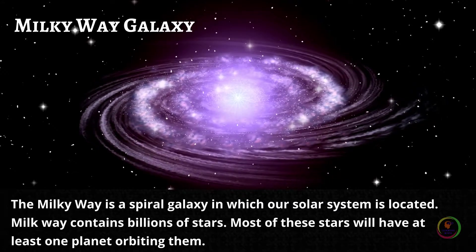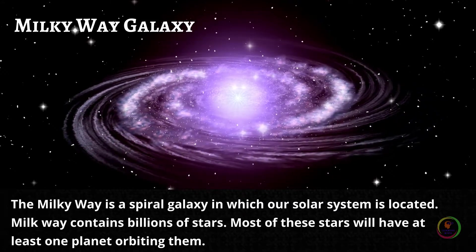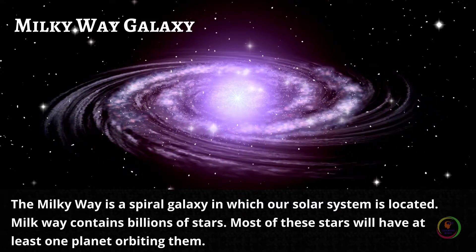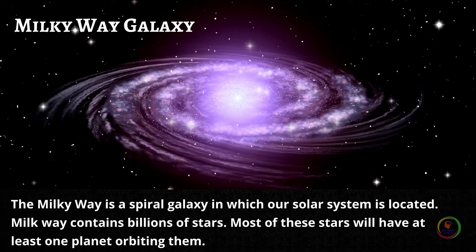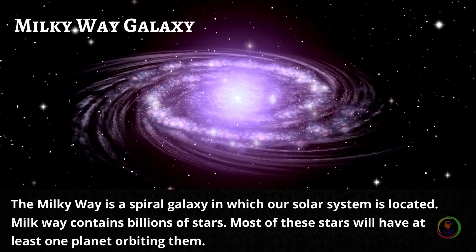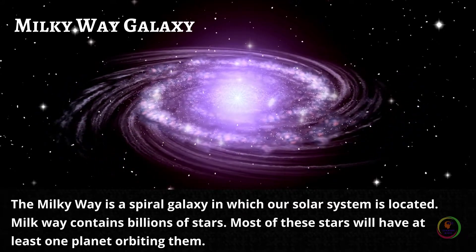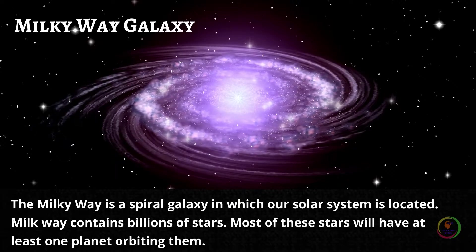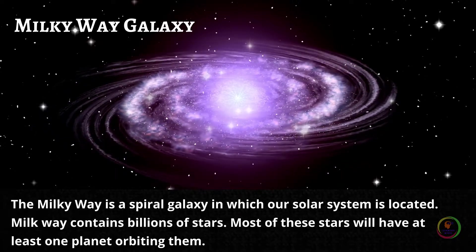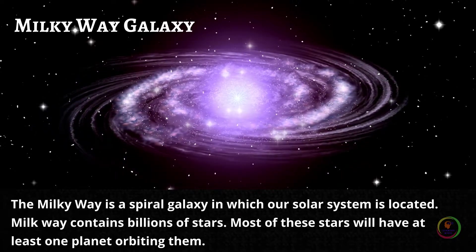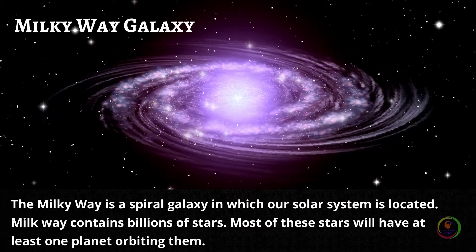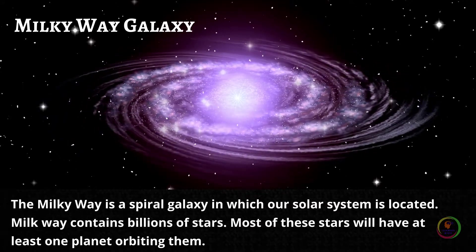Milky Way Galaxy. Milky Way is a spiral galaxy in which our solar system is located. Milky Way contains billions of stars, and most of these stars will have at least one planet orbiting them.